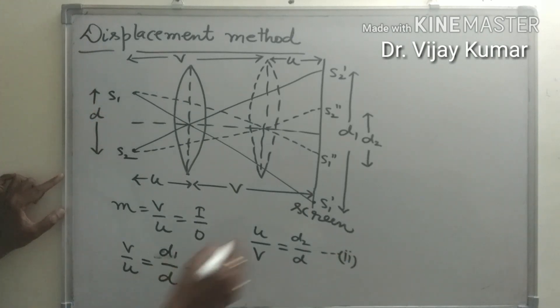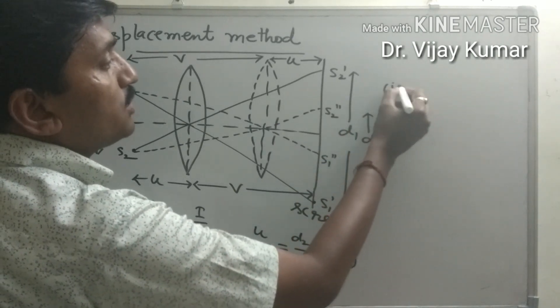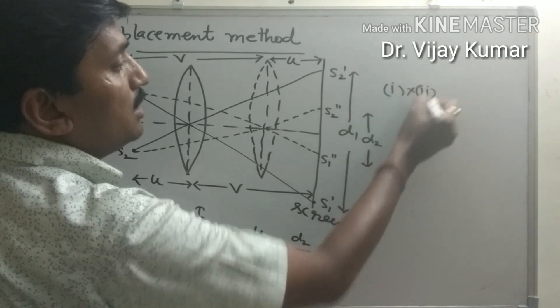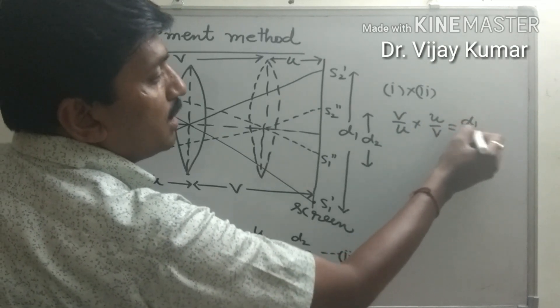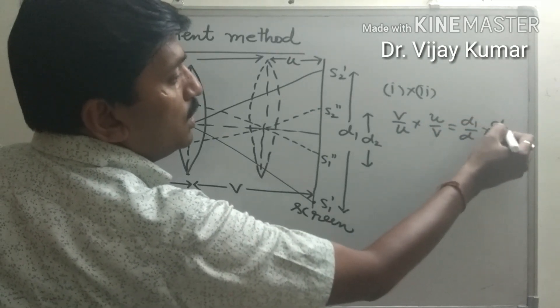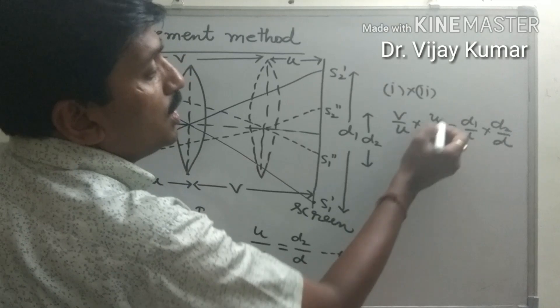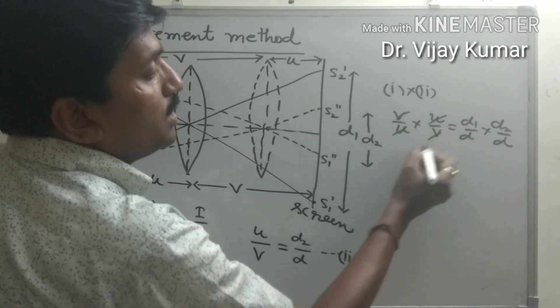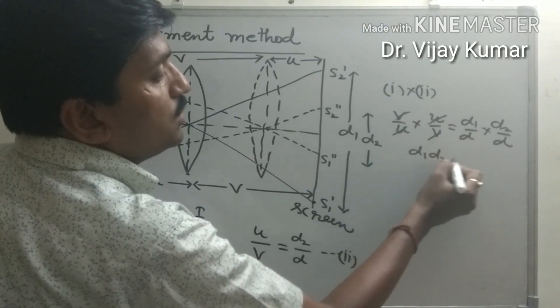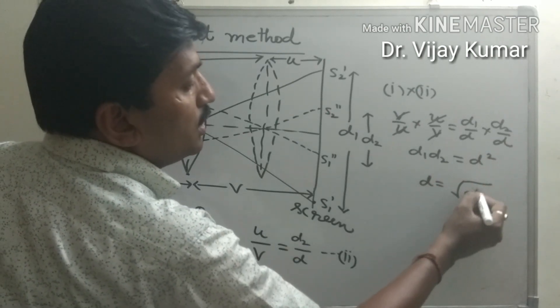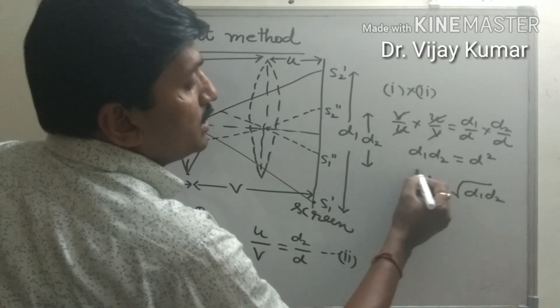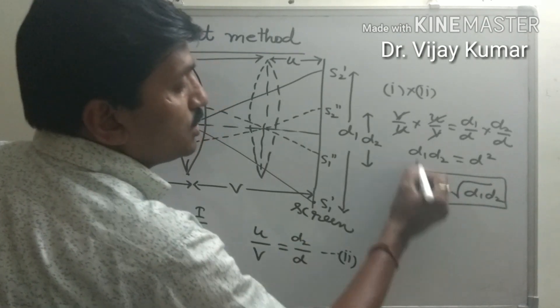Now multiply both equations. First equation multiplied by second: v upon u times u upon v equals d1 upon d times d2 upon d. v cancels out, u cancels out: d1 times d2 equals d squared. Therefore, d equals square root of d1 times d2. This is the separation between coherent sources.